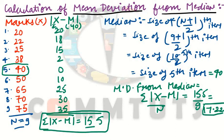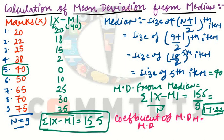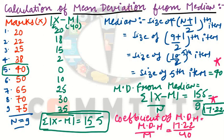Next, calculate the coefficient of mean deviation from median. The formula is: coefficient of MD from median = mean deviation from median divided by median. That is 17.22 divided by 40, which gives coefficient = 0.43.